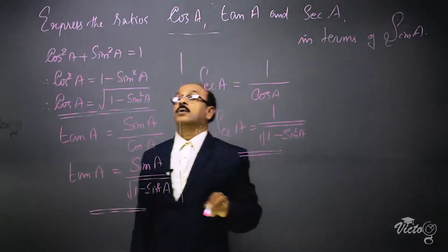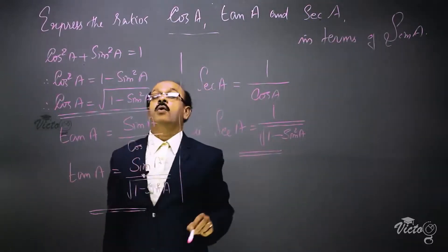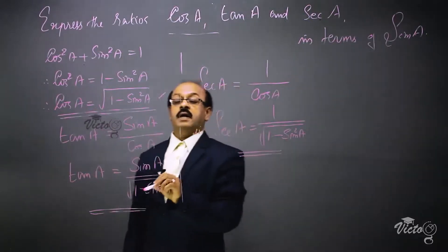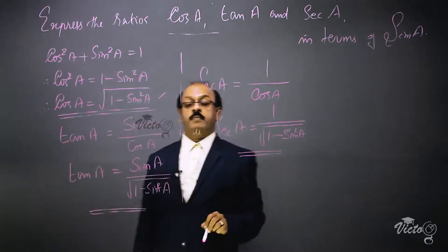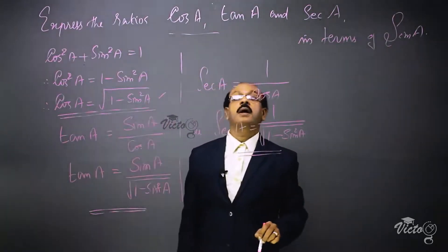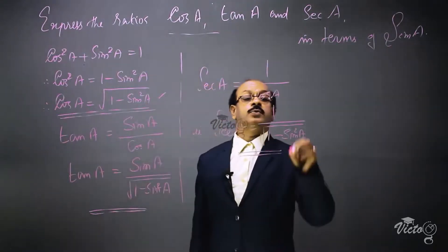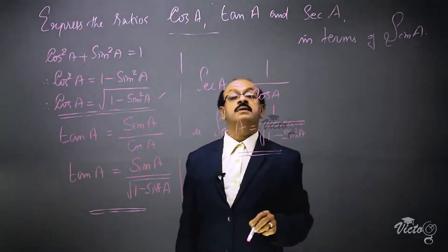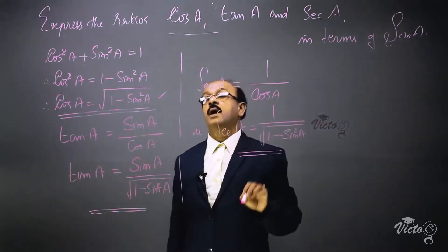The three results are: cos A = √(1 - sin²A), tan A = sin A / √(1 - sin²A), and sec A = 1 / √(1 - sin²A).